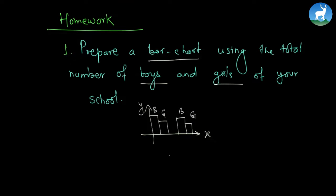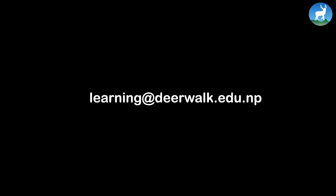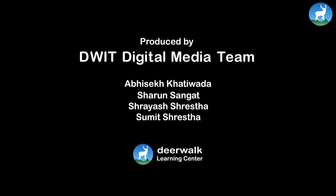Let me revise: a bar chart is essentially a chart consisting of horizontal and vertical components. It consists of rectangular elements along the x-axis and y-axis. We have two axes and different kinds of information like boys and girls. Find out the exact number of boys and girls of your school and prepare a bar graph. If you have any questions or suggestions regarding this video, feel free to write us at learning@diawalk.edu. Thank you.